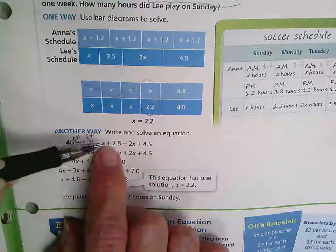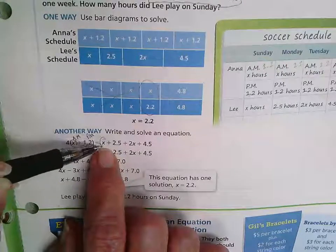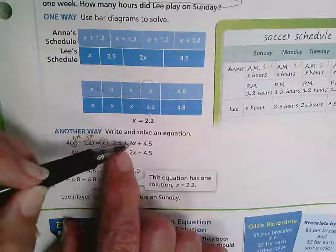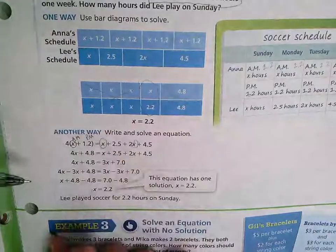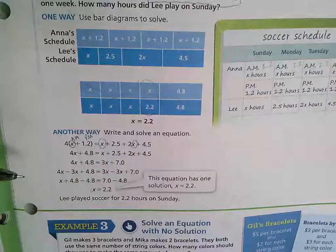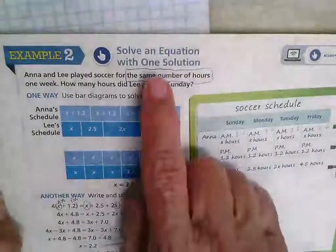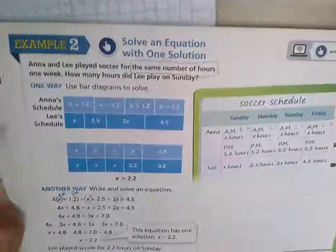and we're going to put 2.2 in right here for X, and right here for X, and see if the two are equal. And they are. So that is an example of an equation with only one solution.